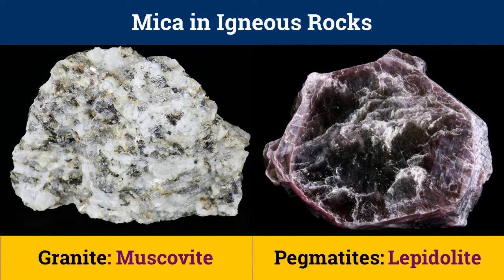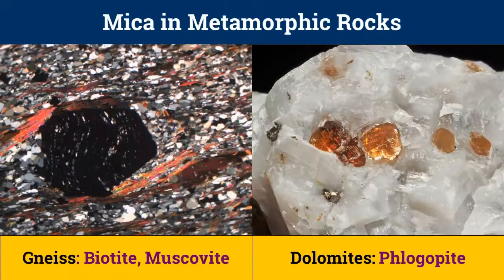Muscovites mainly occur in granites and pegmatites, although they may also occur in sedimentary rocks. Lepidolites are primarily found in pegmatites. Biotite occurs abundantly as a metamorphic mineral in biotite gneiss and biotite schists. Phlogopite is a mineral resulting from dolomitization of impure dolomite. The left image shows a microscopic view of black garnet surrounded by reddish-yellow muscovite and brown mica flakes, and the right image shows copper-red phlogopite mica embedded in white crystalline limestone.